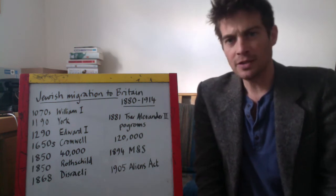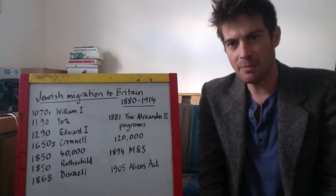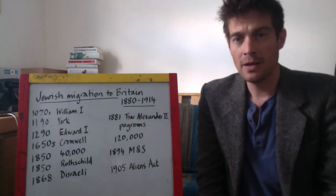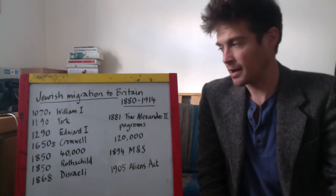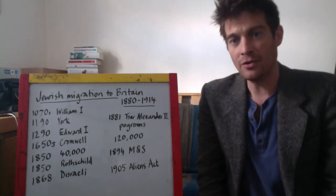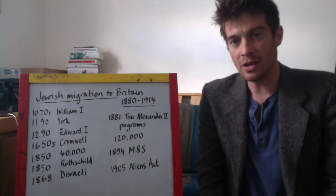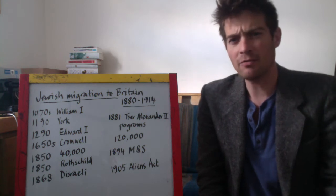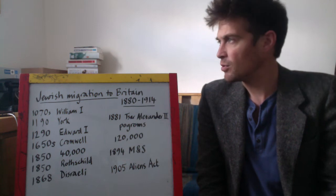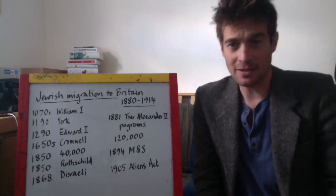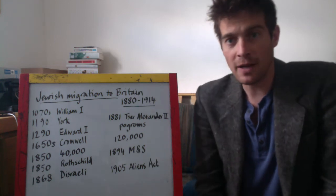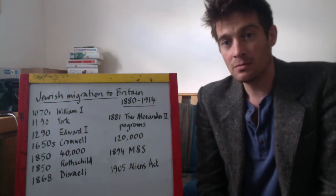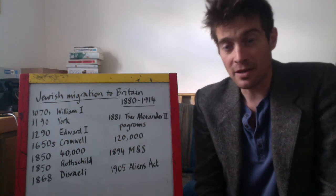It wasn't always a happy existence for Jewish people living in England in the medieval period. They were seen as being different, not just for their religion, but also because they were allowed to lend money — whereas the Christian church had banned moneylending. This made them a target economically. There was jealousy and a perception that Jewish people had a lot of money, and often people who owed them money would be violent and kill them rather than pay back what they owed.